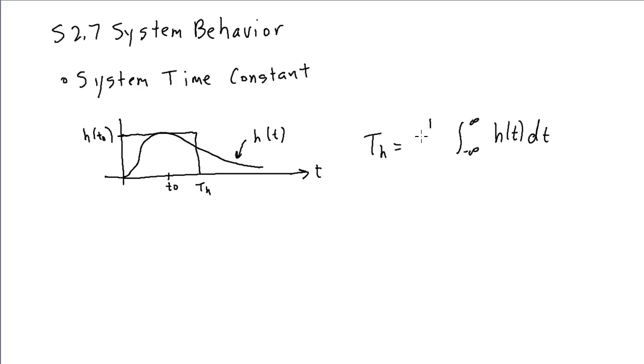So, if we divide by ht0, we'll get the desired width of this equivalent system. And so, we define this th as being the system time constant.